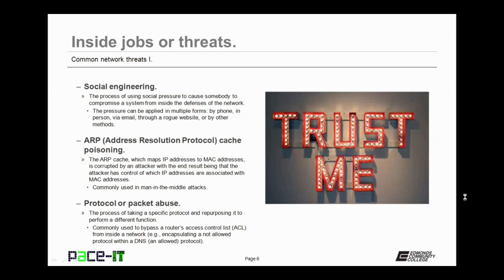ARP cache poisoning is another threat that can occur on your network. In ARP cache poisoning, the ARP cache — which maps IP addresses to MAC addresses — is corrupted by an attacker, with the end result being that the attacker has control of which IP addresses are associated with MAC addresses. It's commonly used in man-in-the-middle attacks.